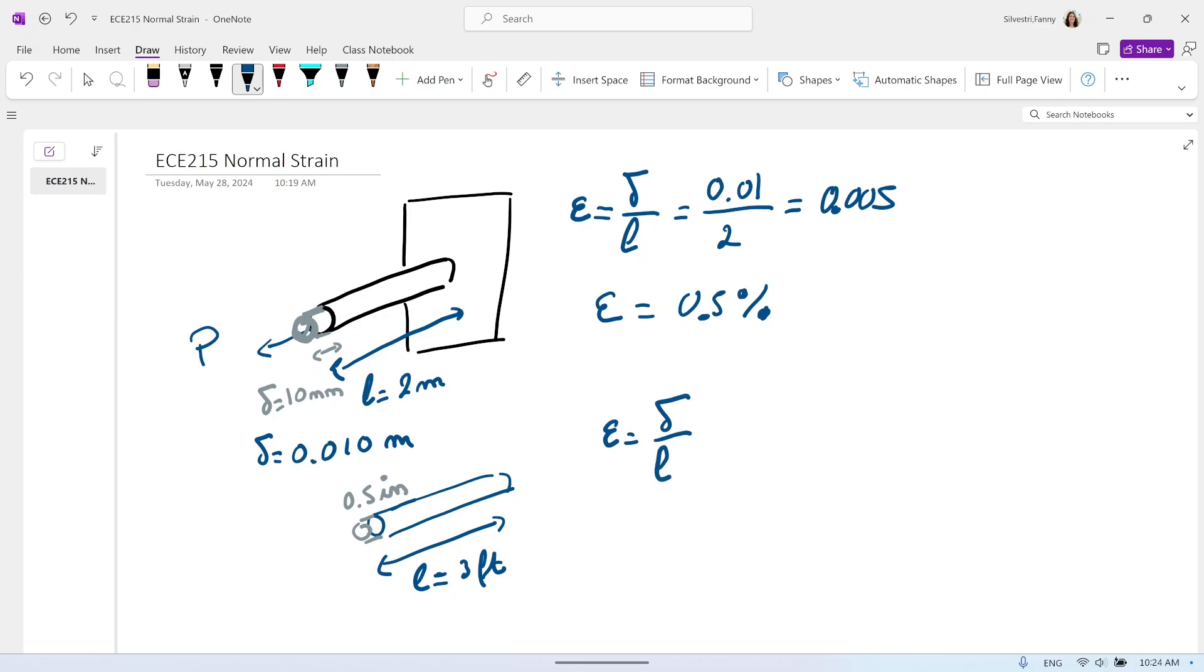So that will be 0.5 inch divided by 3 times 12 to get them in inches too. So we will have equal 0.5 divided by 36.